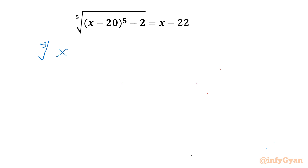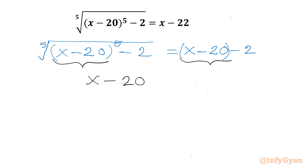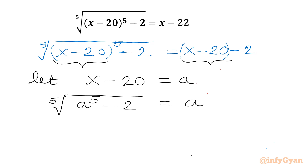We have the 5th root of (x minus 20) to the power 5, minus 2. Now on the right-hand side, can we write 22 as 20 plus 2? So it will become x minus 20 minus 2. You can see x minus 20 appearing on both sides, so we will consider the substitution x minus 20 equal to a. Our equation becomes the 5th root of a to the power 5, minus 2, equal to a minus 2.